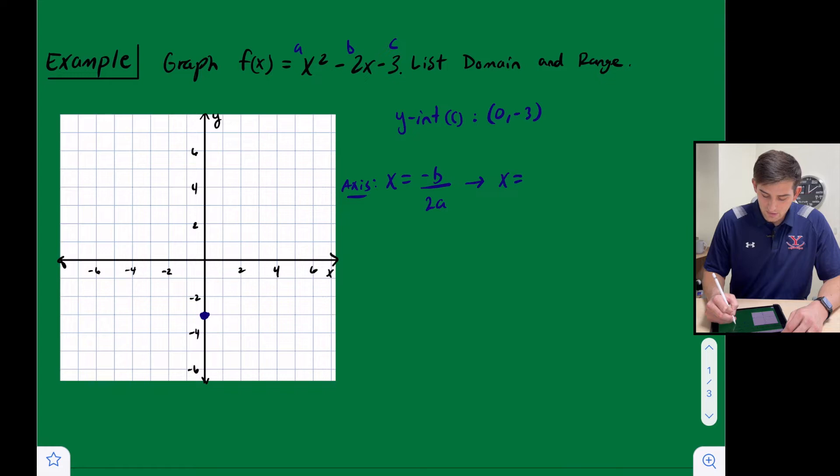So opposite of b would be 2, and 2 times a is 2 times 1, and we get x equals 1. Okay, so x equals 1.